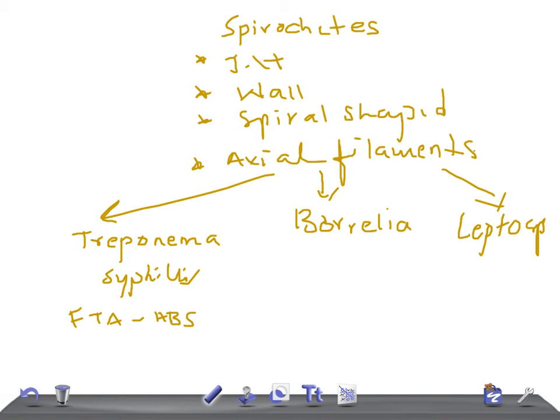The treatment for syphilis — there is one very specific drug: benzathine penicillin. Here's a question: if a pregnant patient has syphilis and is sensitive to penicillin, what would be the next step? She is a 26-year-old pregnant patient, penicillin-sensitive, with secondary syphilis. Is penicillin used or not, and if not, which drug would you give? Answer through the comments.